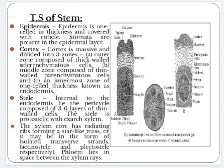Internal structure. First, transverse section of stem. The internal structure of aerial shoots shows the following tissue systems: the outer covering known as epidermis, which is one cell in thickness and covered with cuticle. Stomata are present in the epidermal layer.